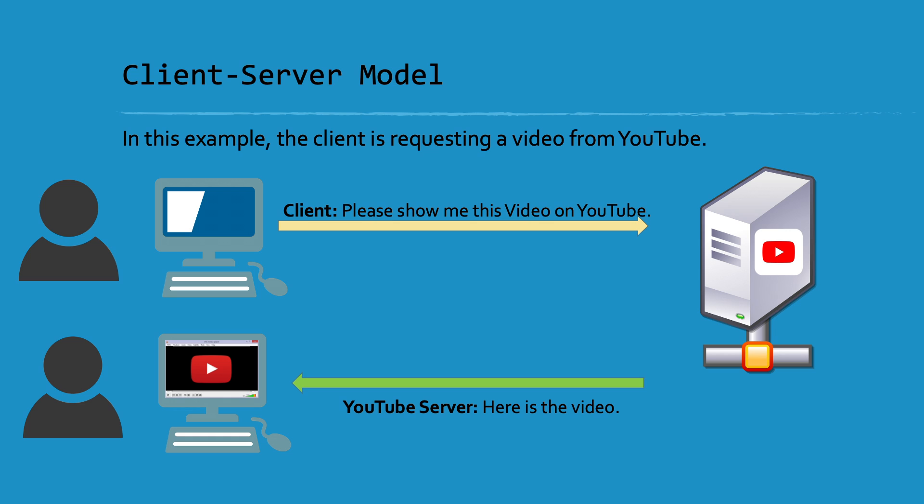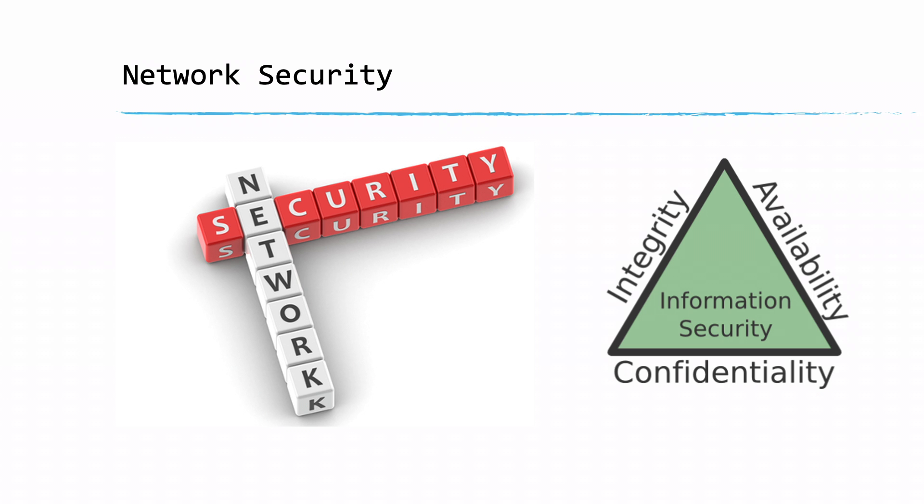This resource can really be anything — a file, a video, a website, etc. For example, the client here is our computer or our browser like Google Chrome or Firefox, and the client is requesting a video on YouTube. The YouTube server then responds with the video so we're able to see it.